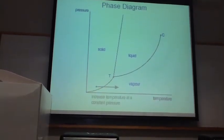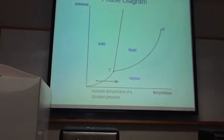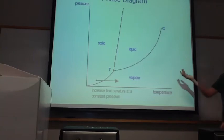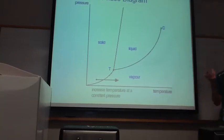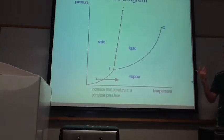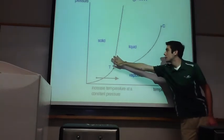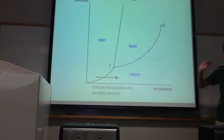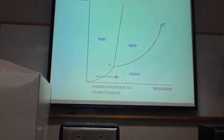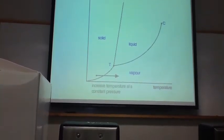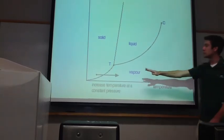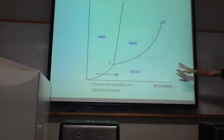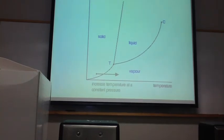So this is a phase diagram — you might remember seeing this from general chemistry. Typically we think of going from solid into the liquid phase and then into the gaseous phase. However, what we're going to do today is hold the pressure constant. When we hold the pressure constant, if we can get the pressure low enough, you should see it sublime from the solid phase directly into the vapor phase.